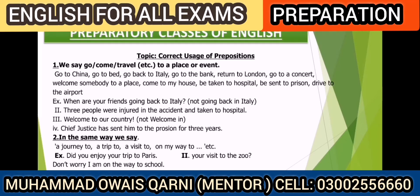With 'journey,' 'trip,' and 'visit,' we also use the preposition 'to.' With 'way,' we use 'on the way.' This may be new for you: we often say 'I am on the way' — for example, 'I am on the way, so don't disturb me.'